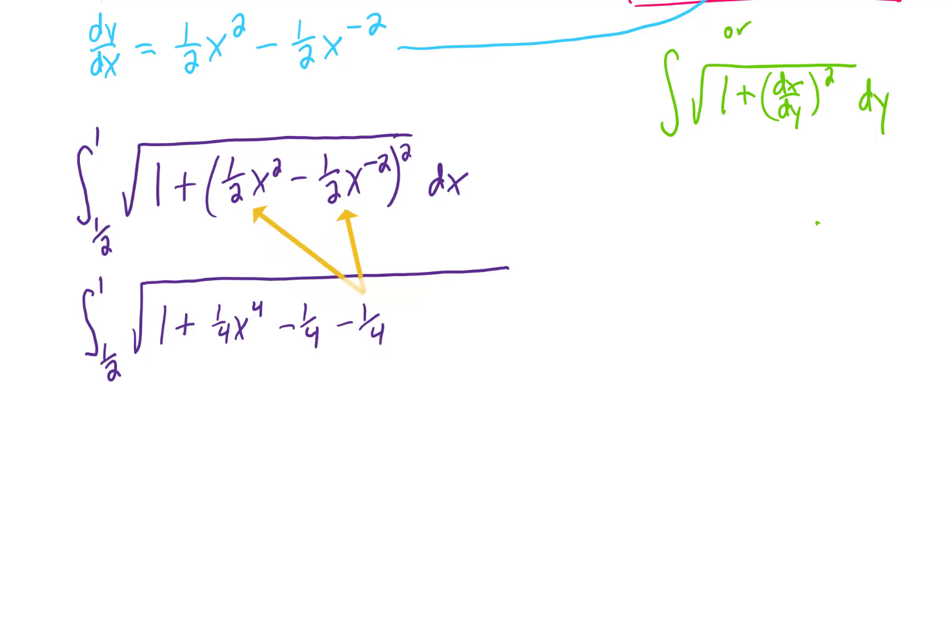Then we have to do it again. So we're going to get another minus 1/4. And then squaring this last term is going to give us a plus 1/4 x to the negative 4th power. All of that is under the square root and we need to integrate with respect to x.